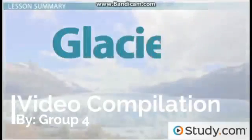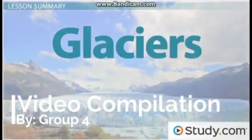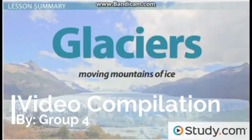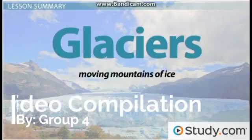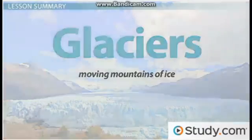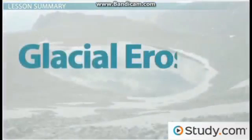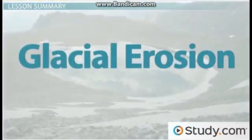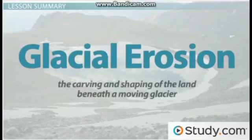Let's review. Glaciers can be thought of as moving mountains of ice. As they move over the landscape, they cause glacial erosion, which is defined as the carving and shaping of the land beneath a moving glacier.